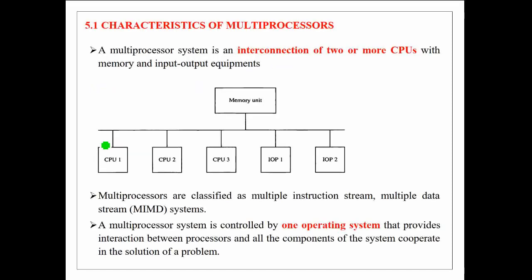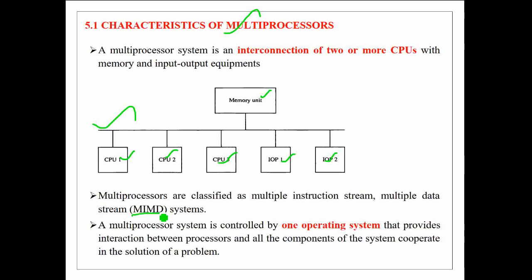Now let's see characteristics of multiprocessors. A multiprocessor system is a system that contains an interconnection of two or more processors with memory and input/output equipments. In general, multiprocessor systems are classified as Multiple Instruction Stream, Multiple Data Stream systems, i.e. MIMD systems.